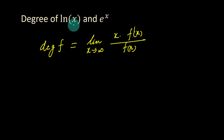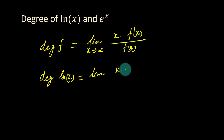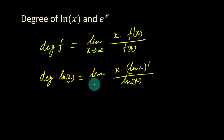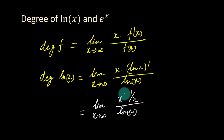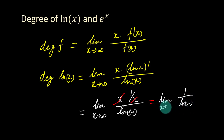I will use this formula to calculate the degree of natural log of x and e to the x. So degree of natural log of x is equal to the limit of x times the differential of ln(x) upon natural log of x, when x tends to infinity. We can write it as the limit of x times the differential of ln(x), which is equal to 1 over x, upon natural log of x when x tends to infinity. Here we cancel x by x and we are left with the limit of 1 upon natural log of x, when x tends to infinity.